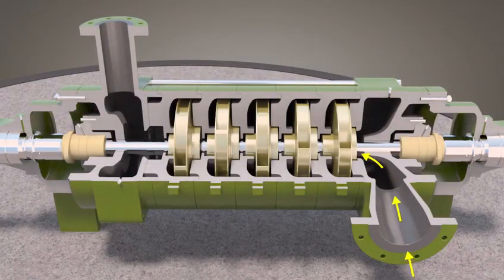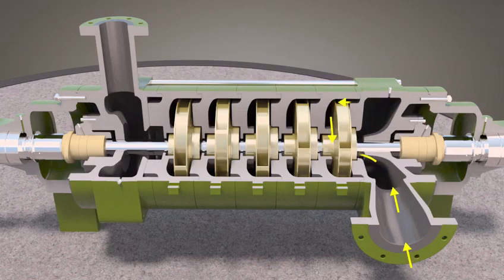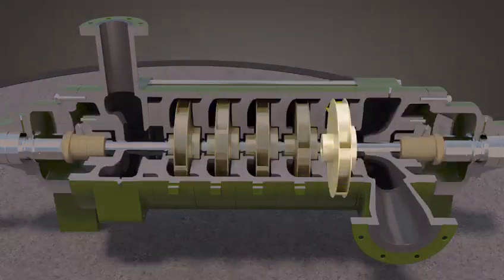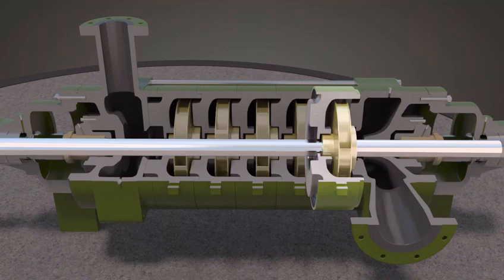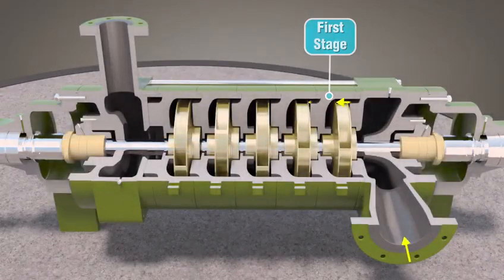The suction port directs fluid to the first impeller. One impeller for each stage is attached to the shaft. Each impeller fits into a volute chamber in the casing. A stage is composed of a rotating impeller and a stationary volute in the casing chamber.